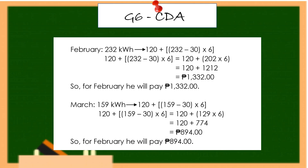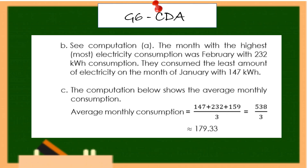The month with the highest electricity consumption was February at 232 kilowatt-hours. The month with the least consumption was January at 147 kilowatt-hours. The average monthly consumption is (147 + 232 + 159) ÷ 3 = 538 ÷ 3 = 179.33 kilowatt-hours.